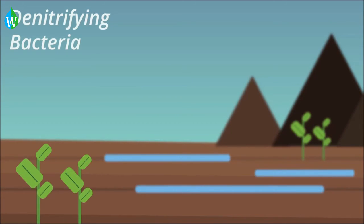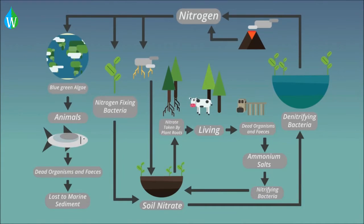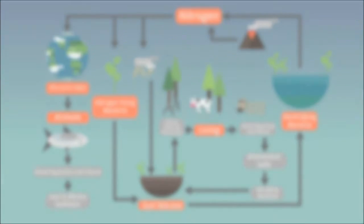So from this video, you should now understand how the nitrogen cycle works. Nitrogen is essential to life and so needs to be fixed in nitrates for plants and therefore animals to access it. Nitrogen is continually cycled through the air, soil, living things and water systems.